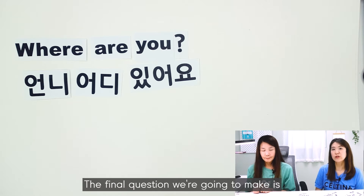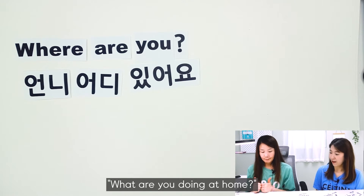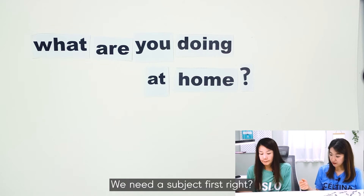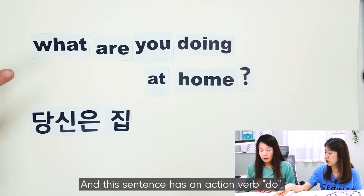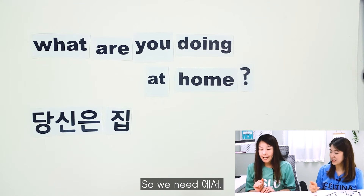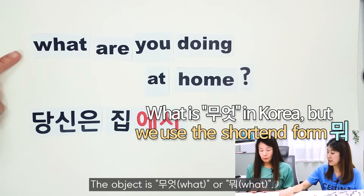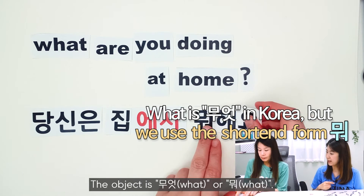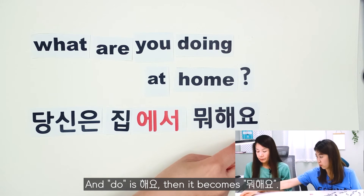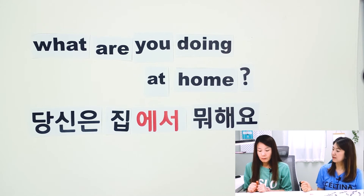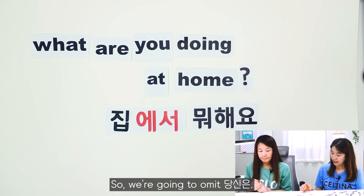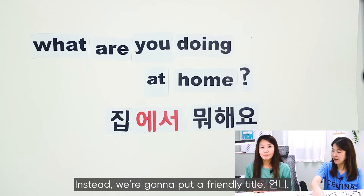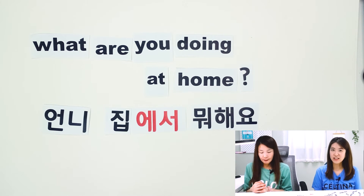The final question we're making is 'What are you doing at home?' Subject is 당신은, home is 집. This sentence has an action verb 'do', so we need 에서. Object is 무엇 or 뭐, and 'do' is 해요 — so 뭐 해요. It becomes 당신은 집에서 뭐 해요? Since 당신은 sounds awkward, we omit it and use 언니: 언니, 집에서 뭐 해요?